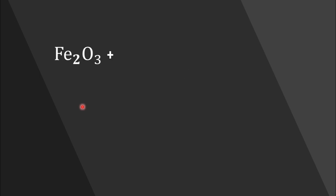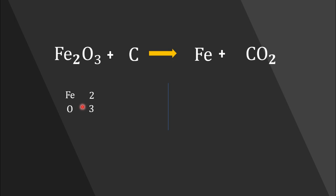Now let's look at another equation: the reaction between ferric oxide and carbon to produce iron and carbon dioxide. In the reactant side there are two iron atoms, three oxygen atoms, and one carbon atom. By looking at the number of atoms on each side, we can say that only carbon atoms are balanced, while iron and oxygen are still unbalanced. So we have to balance our equation by adding the least possible coefficient.